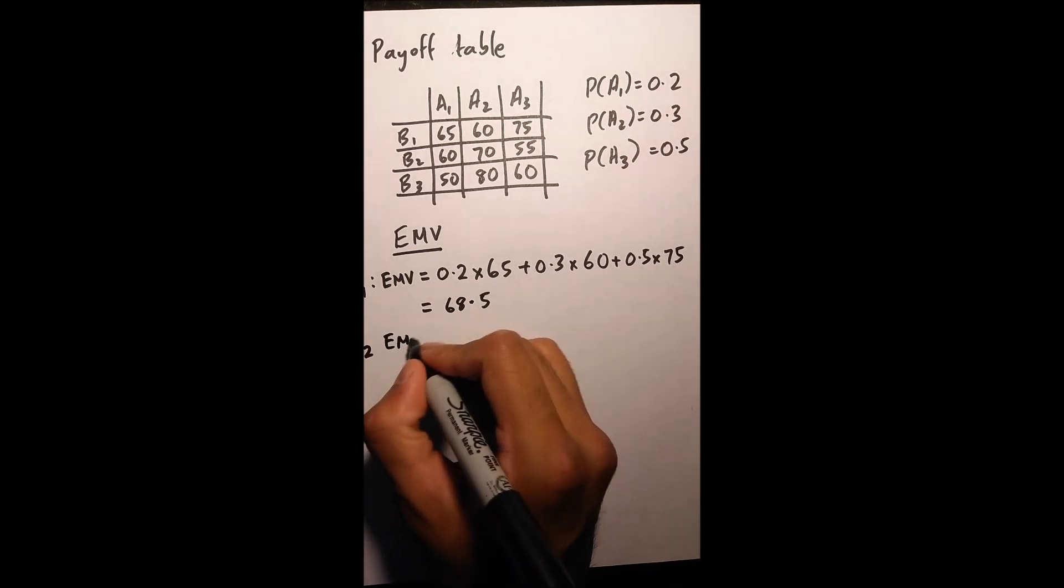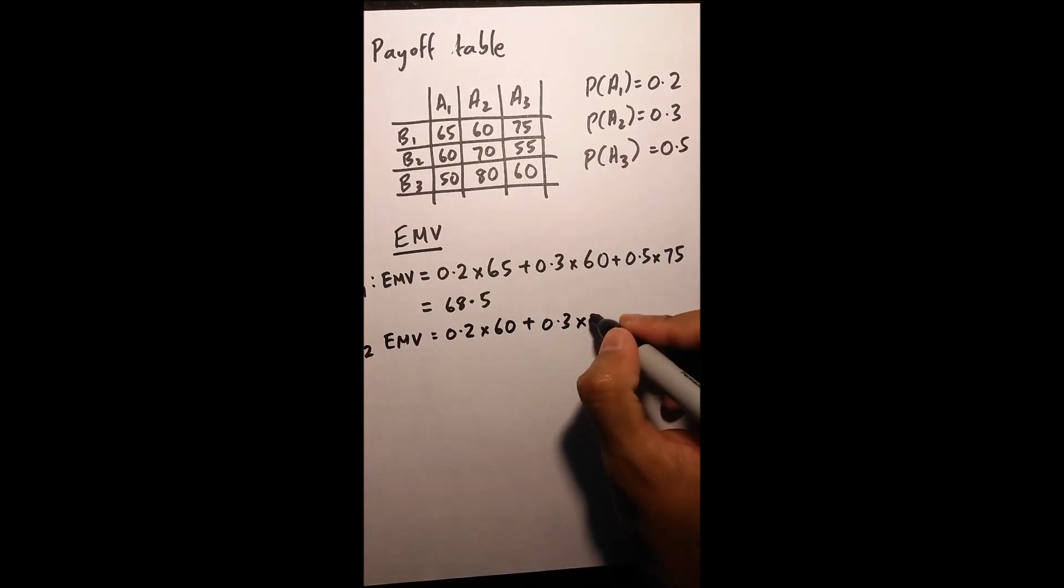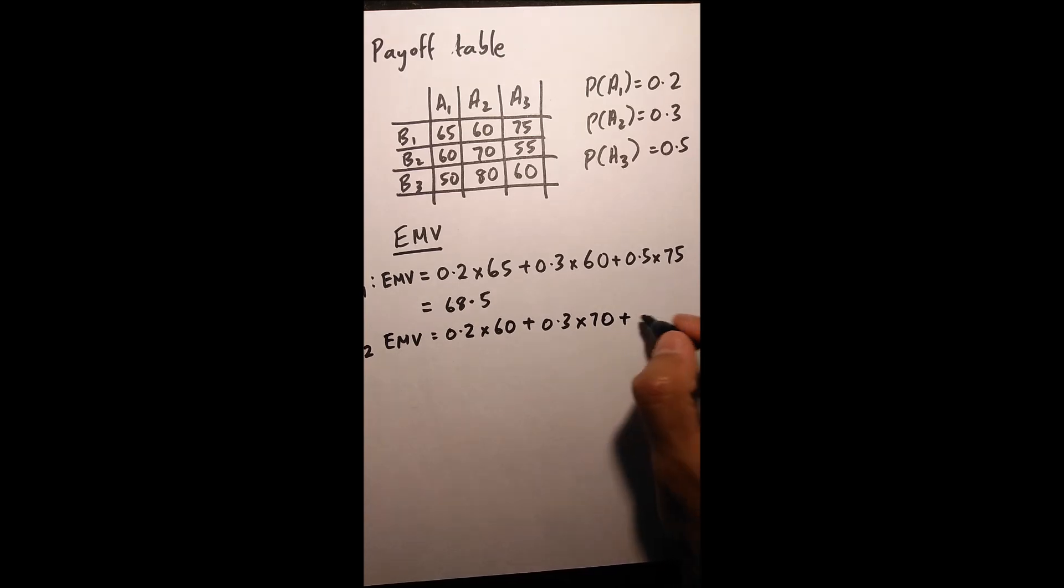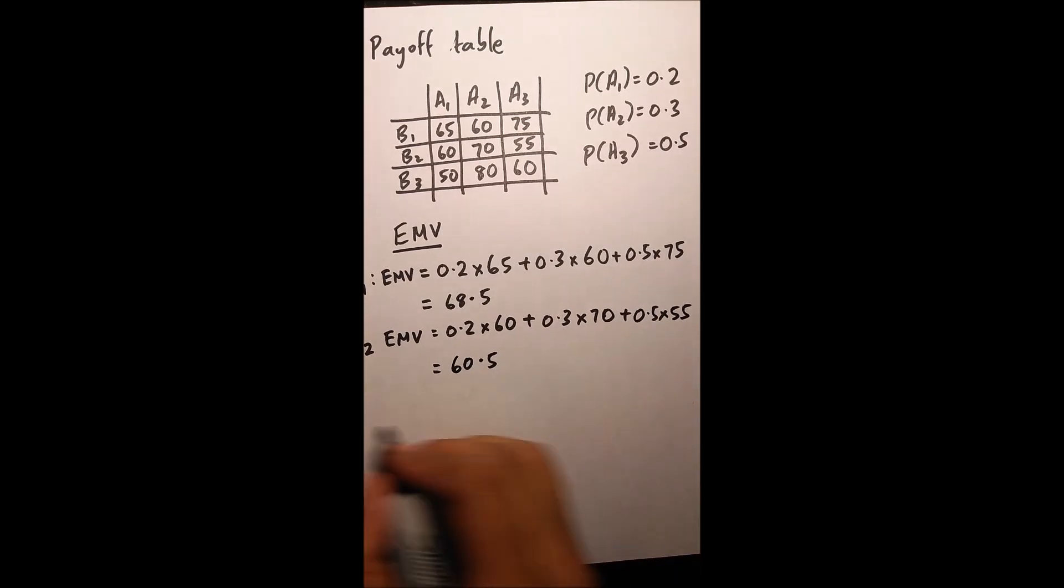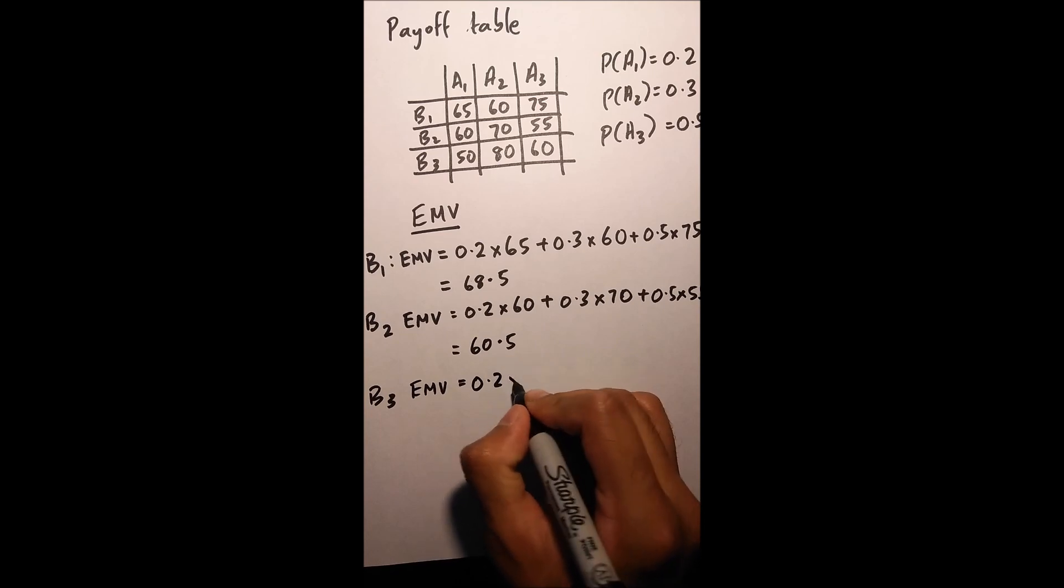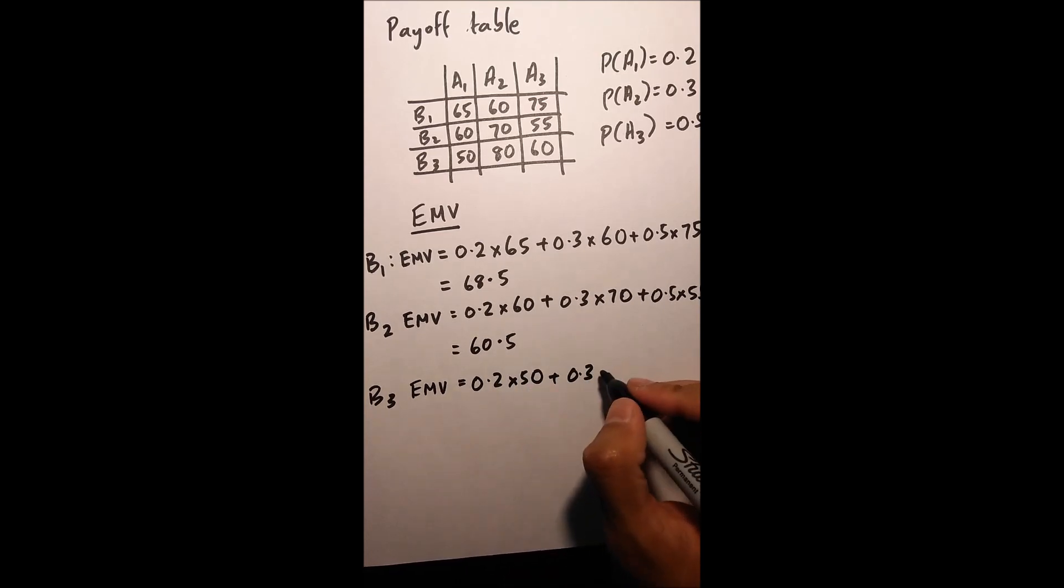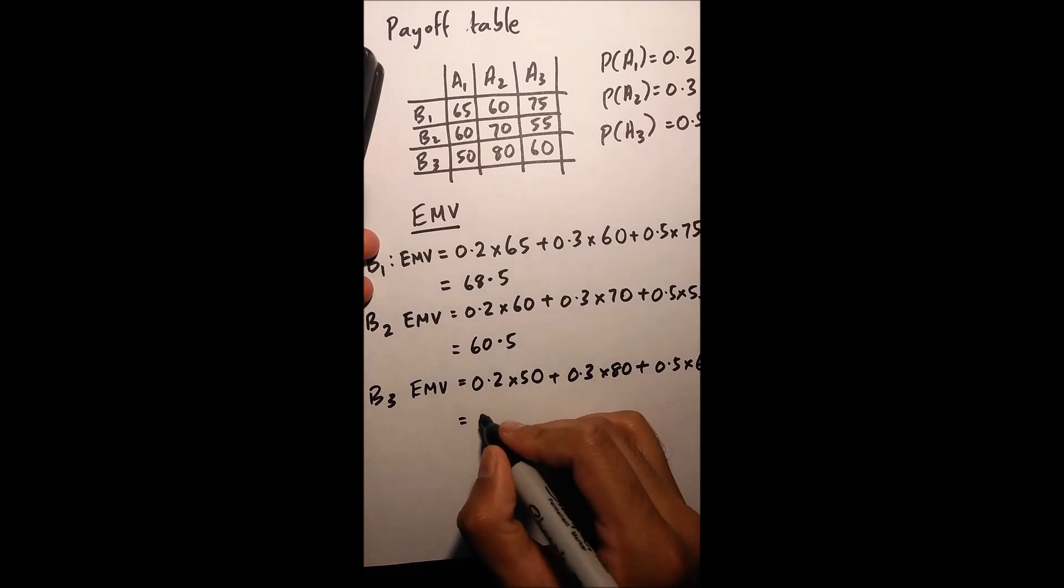For B2, same thing, I'm taking my probabilities, which gives 60.5. For B3, it's the same thing. My EMV equals 0.2 times 50, 0.3 times 80, plus 0.5 times 60, which equals 64.